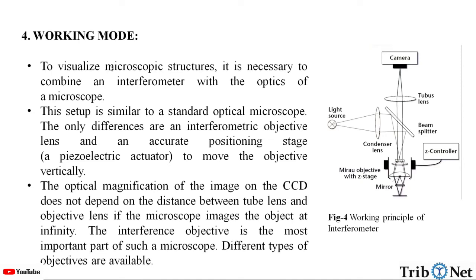Let us understand the working mode of the interferometer. To visualize a microscale structure, it is necessary to combine an interferometer with the optics of a microscope. This setup is similar to a standard optical microscope. The only differences are the interferometer objective lens and an accurate positioning stage — that is, a piezoelectric actuator — to move the objective vertically. The optical magnification of the image on the CCD does not depend on the distance between the tube lens and objective lens if the microscope images the object at infinity. The interference objective is the most important part of such a microscope, and different types of objectives are available.